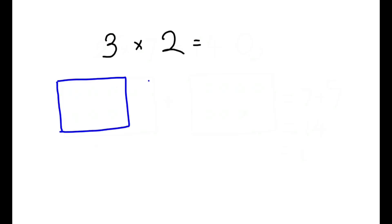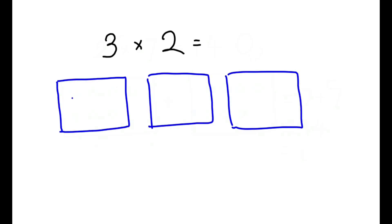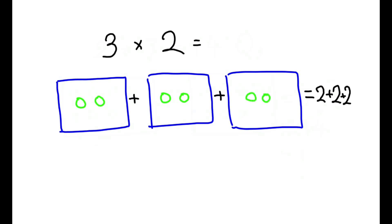3 times 2 means there are 3 boxes, and each box has 2 circles, and the answer is the total number of circles, which is 2 plus 2 plus 2, which equals to 4 plus 2. The answer is 6.